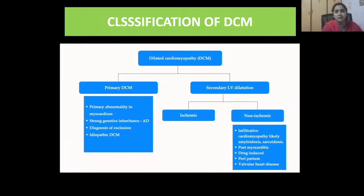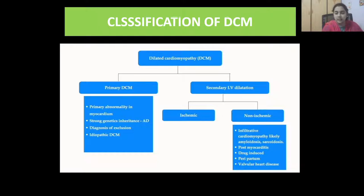Classification of DCM: classified into primary DCM and secondary due to LV dysfunction. Primary DCM is due to a primary abnormality in the myocardium, with strong genetic inheritance, autosomal dominant disorders, and is a diagnosis of exclusion — idiopathic DCM. Secondary LV dilatation is characterized as ischemic and non-ischemic. Non-ischemic is primarily due to infiltrative cardiomyopathies like amyloidosis, sarcoidosis, post-myocarditis, drug-induced, peripartum, and valvular heart diseases.